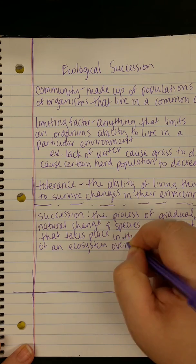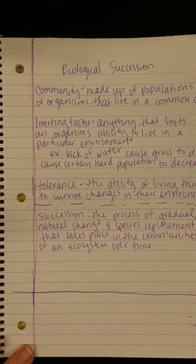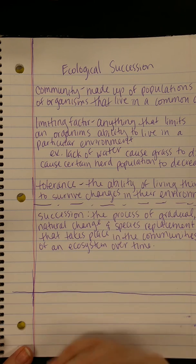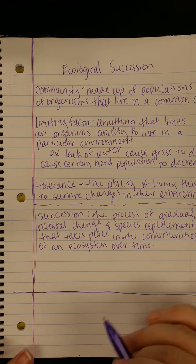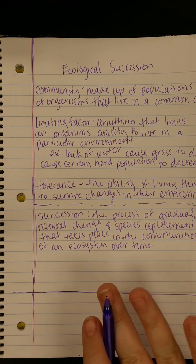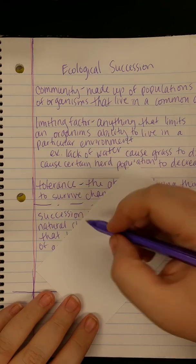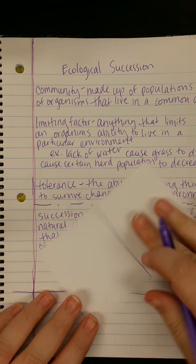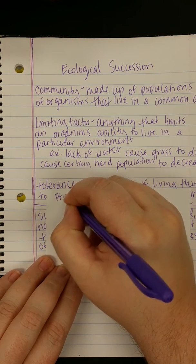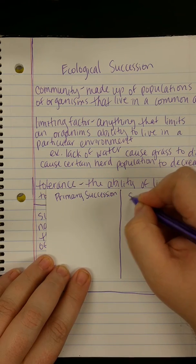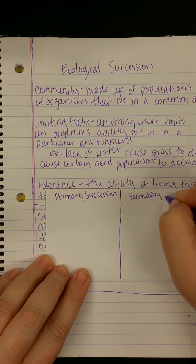Basically, it means the animals change or the plants change — they start growing in a place where they have never grown before, or they start growing back in a place that has been destroyed by something. Now take a note card and divide it into two. On one side you're going to have primary succession, and on the other side you're going to have secondary succession.